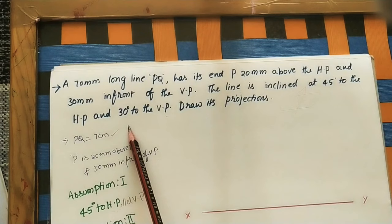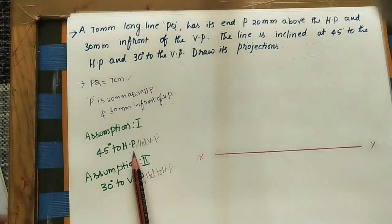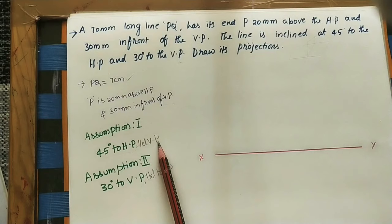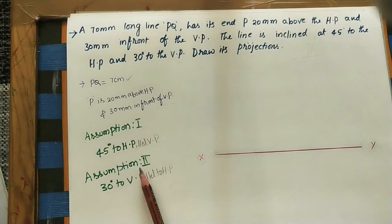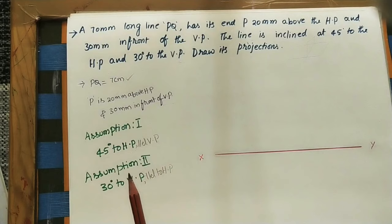Two angles are given, so we make two assumptions. First assumption: the line makes 45 degrees with the HP and we assume it is parallel to the VP — that is, zero degrees to the VP. We do the diagram according to this assumption first. Second assumption: the line makes 30 degrees with the VP and we assume it is parallel to the HP.